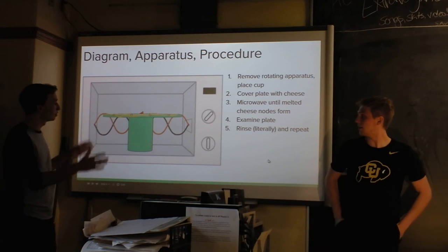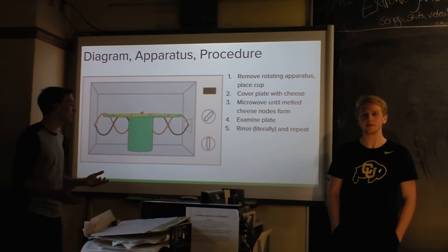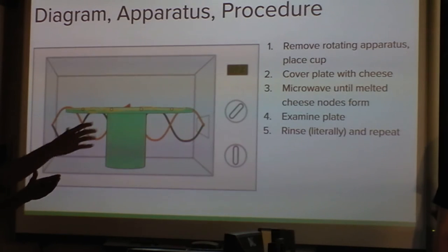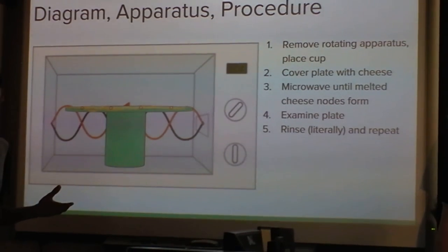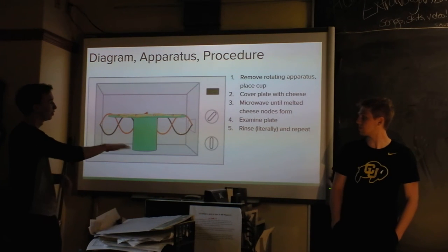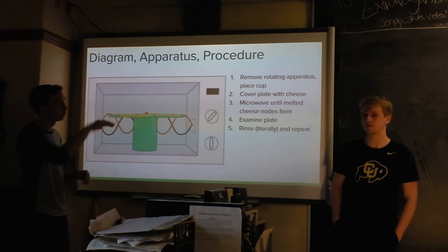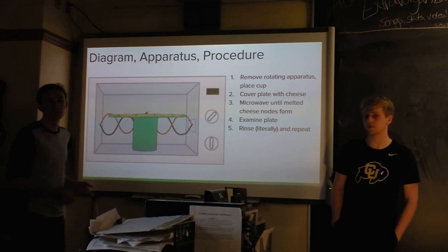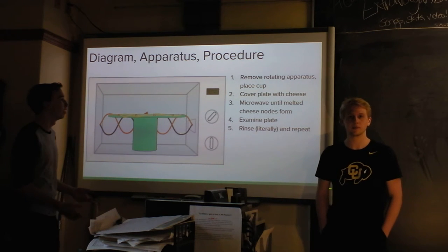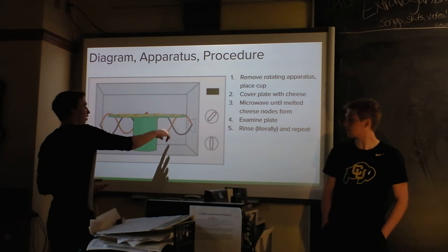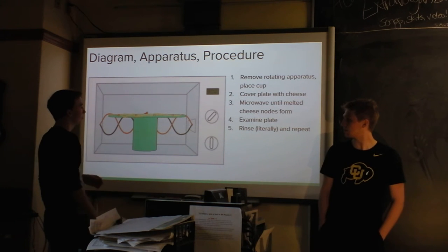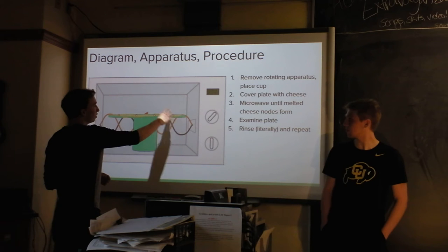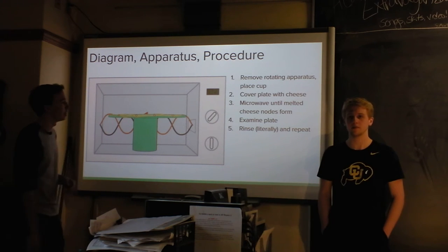So taking all this knowledge, applying it into our experiment, the first thing we did was take out the spinny tray at the bottom, because that tries to move your food through the standing waves more evenly, so that it can get heated. All the water molecules are evenly heated and flipped back and forth. So we got rid of that, put a cup over the top of that, and then a plate of cheese, because cheese is pretty easily melted in a microwave. So you can see here the waves moving, that would move across the plate of cheese, and we expected there to be very melted parts of cheese here, almost no melted cheese, lots more melted cheese, et cetera, as it went.